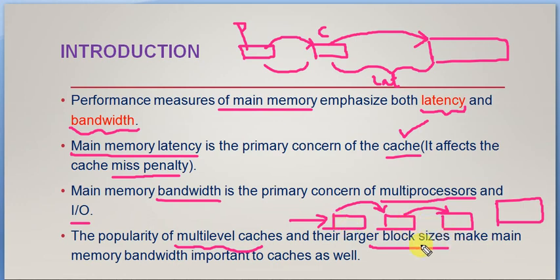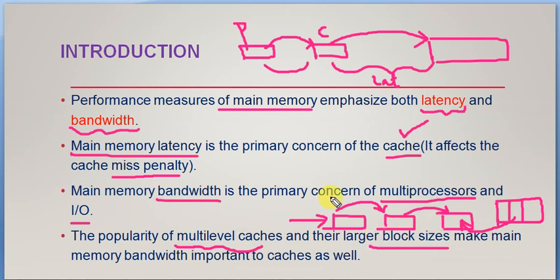Because of multi-level caches and larger blocks, main memory bandwidth is important to cache as well. How much data can be accessed from primary memory depends on the block size present in cache and the number of cache levels in the system. Overall, latency and bandwidth together are used for identifying the performance of the entire system and the cache memory.